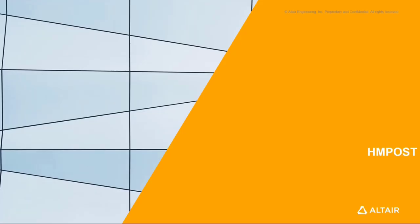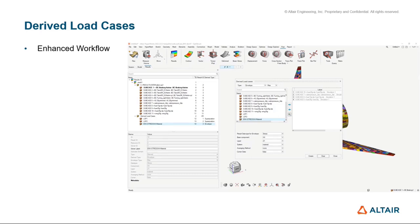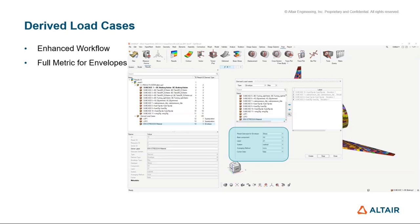Moving on to HyperMesh Post — the first enhancement was on the derived load cases, which we introduced together with the first release of HyperMesh Post. This enhancement is important for two major reasons. First, we are now fully connected with the same backend functionality — our data backend — to unleash all the operators for derived load cases. We now support this with full metric definitions for the envelope.